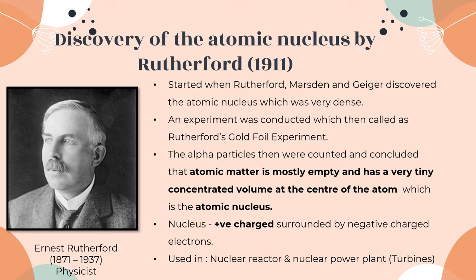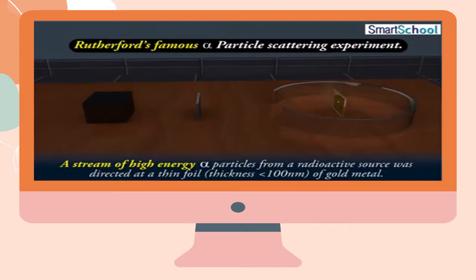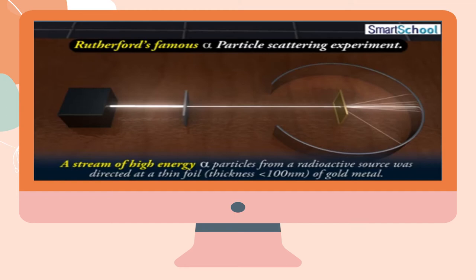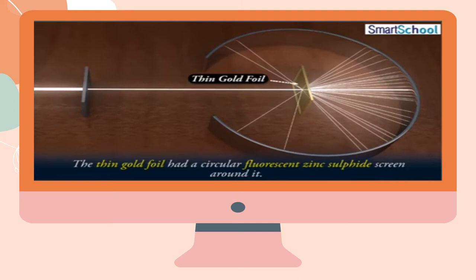The nucleus is positively charged and surrounded by negatively charged electrons. This discovery of the atomic nucleus helps society in the production of nuclear reactors and nuclear power, where nuclear fusion is used to produce steam that runs through turbines to generate electrical power. In the next video, you can see how the experiment was conducted. The radioactive source was directed at a thin gold foil of less than 100 nanometers, which had a circular fluorescent zinc sulfide screen around it.